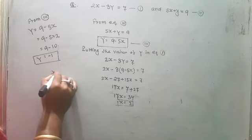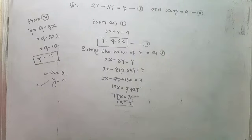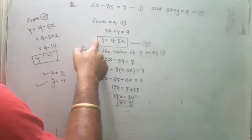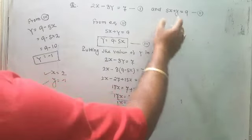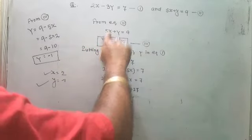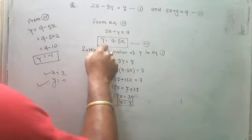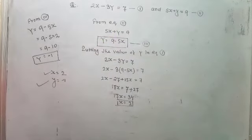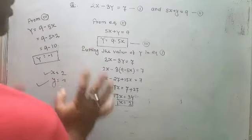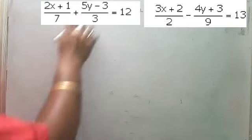Therefore x is equal to 2 and y is equal to minus 1. Same process: you have two equations, from any one find the value of x or y. Here equation two — 5x plus y equals 9 — was easiest, so y equals 9 minus 5x. Then put the value of y in equation one, find x, and put x in equation three to find y. This is substitution method. One more question — a little bit complicated, given in fraction form.